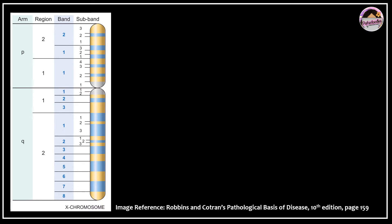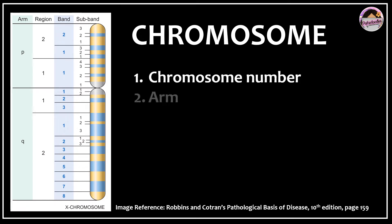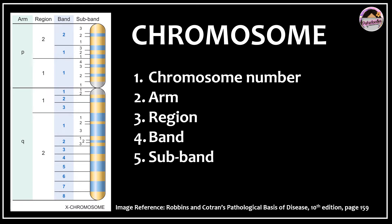Let's start with the chromosome. A chromosome location of a gene can be described in the following ways: first, the chromosome number; second, the arm — short arm is 'p' (petite) and long arm is 'q'; next, the region — the short and long arms go away from the centromere and are divided into regions; then the band; and then a decimal point followed by the sub-band. So remember: chromosome number, arm, region, band, and sub-band.